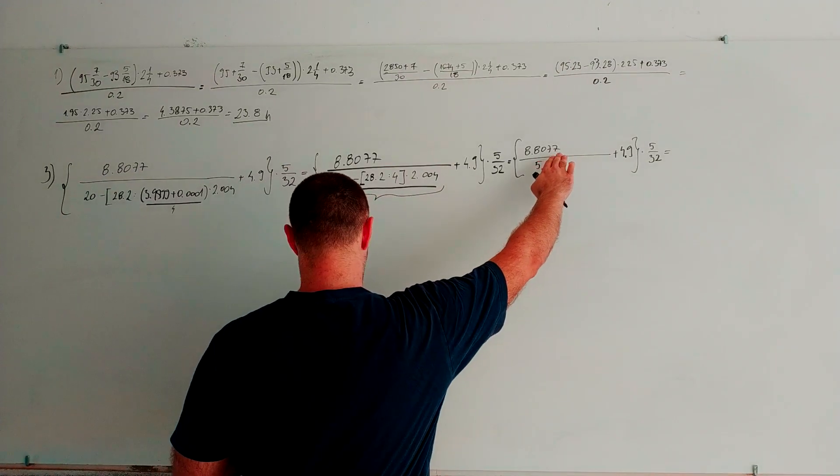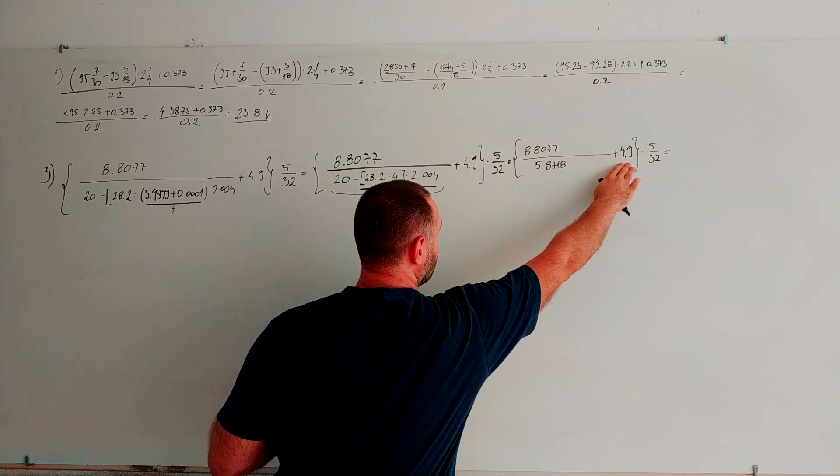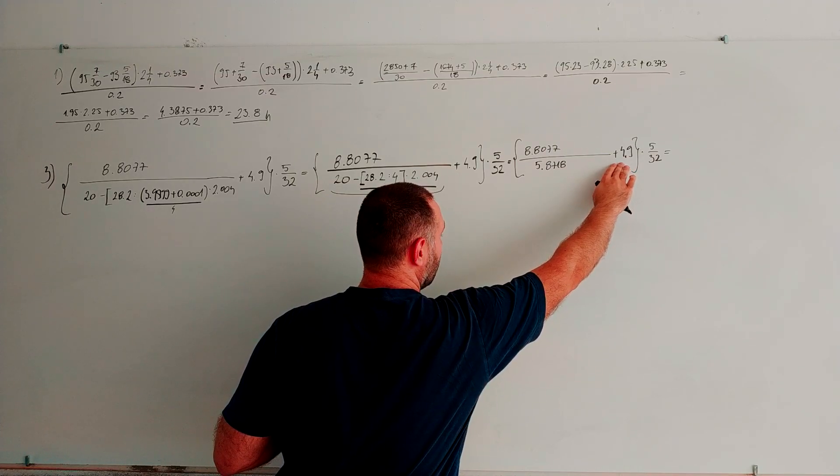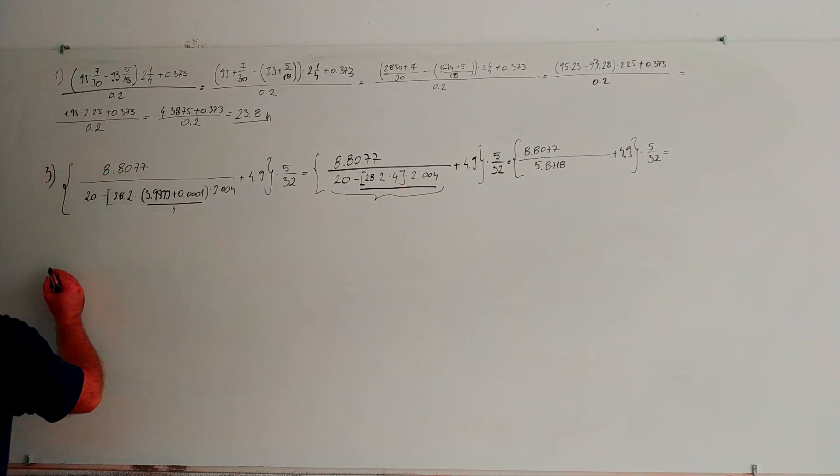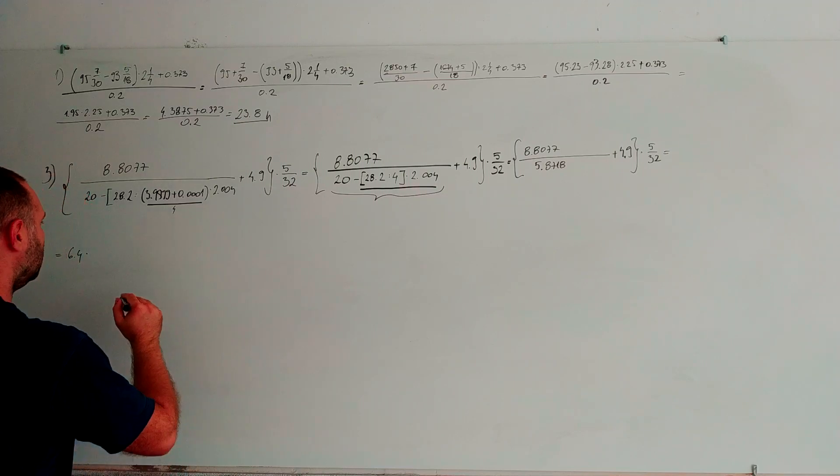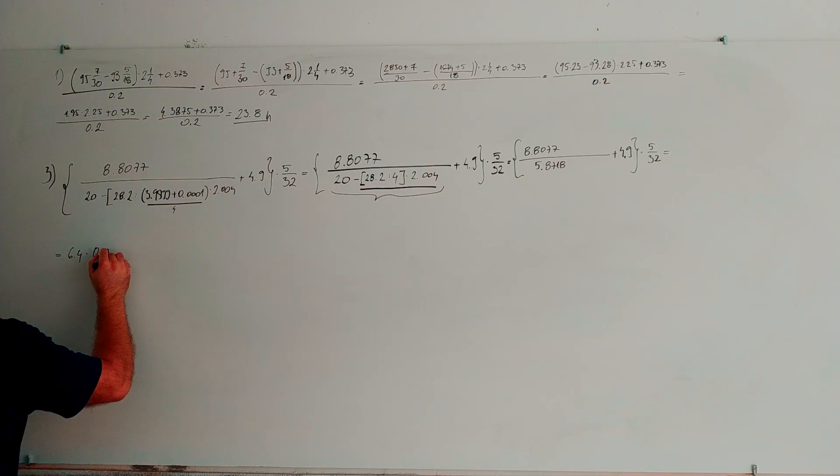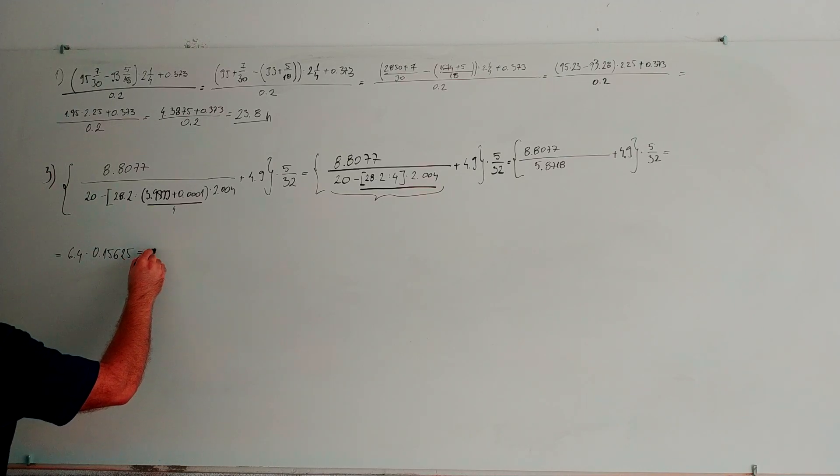If we divide these two numbers, subtract, add 4.9, and multiply by 5 through 32, what we have here is 6.4 multiplied by, if we divide 5 by 32, we have 0.15625. If now we multiply 6.4 by 0.15625, the result is 1.